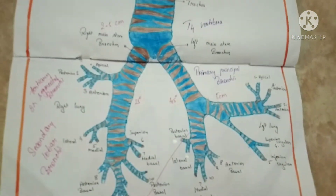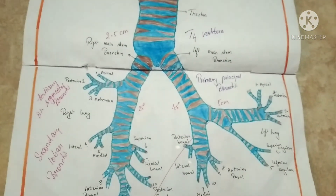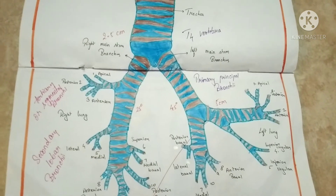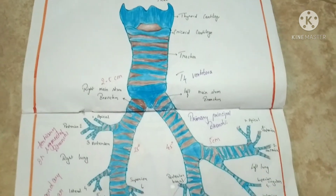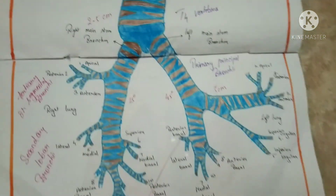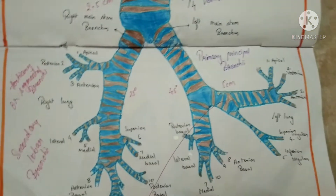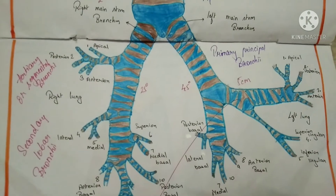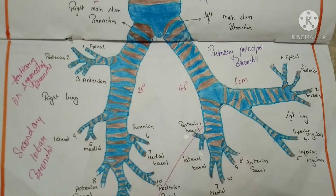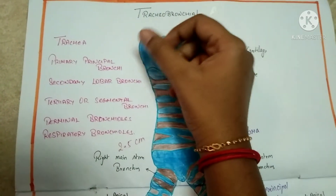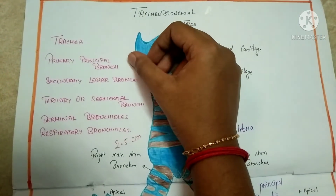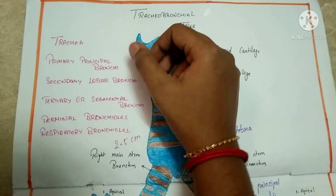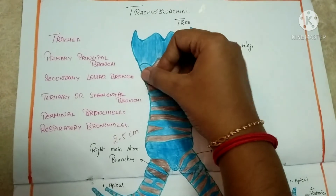The segmental bronchi keep dividing further, forming smaller branches called terminal bronchioles. These still give branches called respiratory bronchioles, which lead to alveolar ducts, atria, and pulmonary alveoli. So the trachea first divides into primary principal bronchi, one for each lung, at the level of the T4 vertebra.